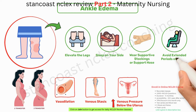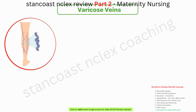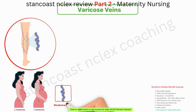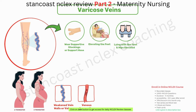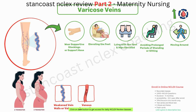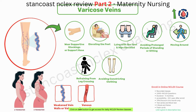Varicose veins, which typically appear in the second and third trimester, are often caused by weakened vein walls or valves and venous congestion. Effective interventions include wearing supportive stockings, elevating the feet when sitting, lying with feet and hips elevated, avoiding prolonged standing or sitting, moving around to improve circulation, refraining from leg crossing, avoiding constricting clothing like knee-high stockings, learning leg exercises, and minimizing prolonged airline travel.